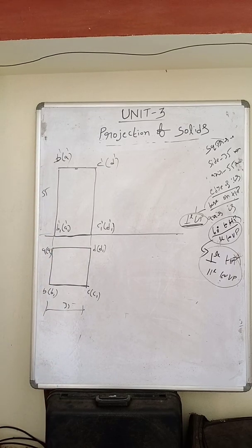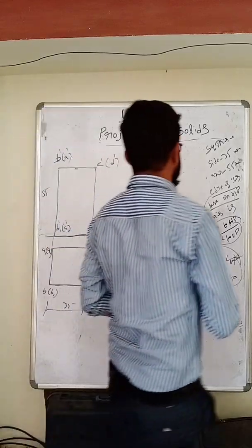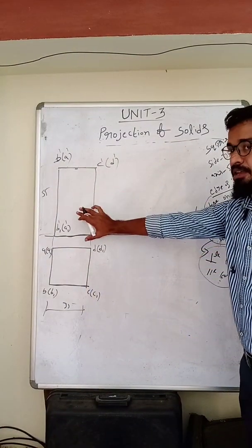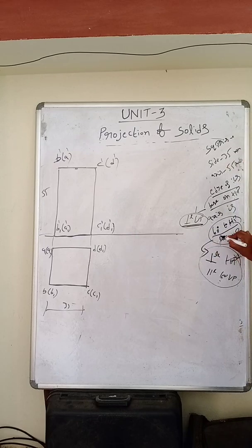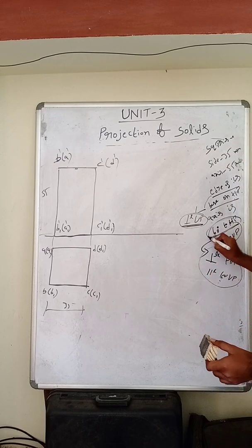Next condition: same as the last problem. So first simple position is done. Next, the second position — the angle of inclination is 60 degrees to HP.